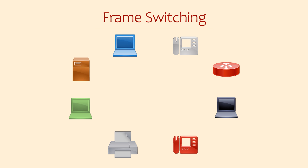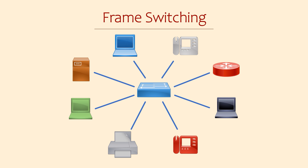Instead of connecting devices directly to each other, devices connect to switches. As you can see, this is so much simpler. When a frame arrives at a switch, the switch decides which link or interface to send the frame out of. This makes sure that the frame gets to the correct destination.